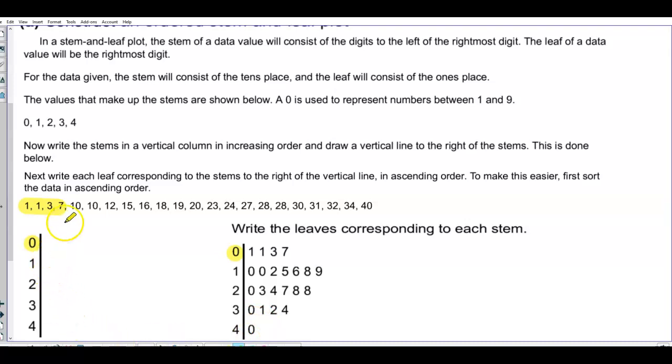Then we're looking at all the numbers that have a tens place of 1. This has a tens place of 1, that 1, all the way up to 19. So the number to the right of the 1 here is a 0, another one is a 0, and then a 2, a 5, a 6, an 8, and a 9.